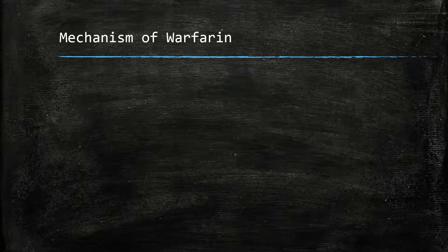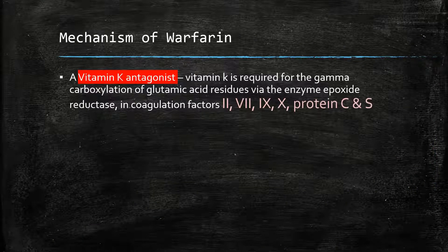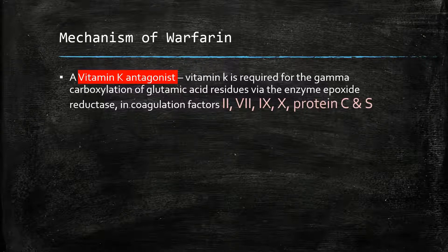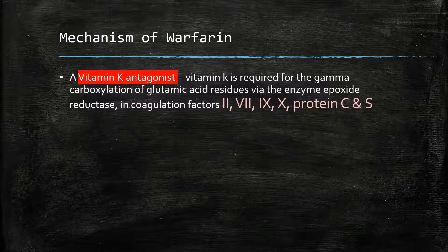How does warfarin do its job? It functions as a vitamin K antagonist. Vitamin K is required for the gamma carboxylation of glutamic acid residues via epoxide reductase in coagulation factors 2, 7, 9, 10, and also protein C and S.